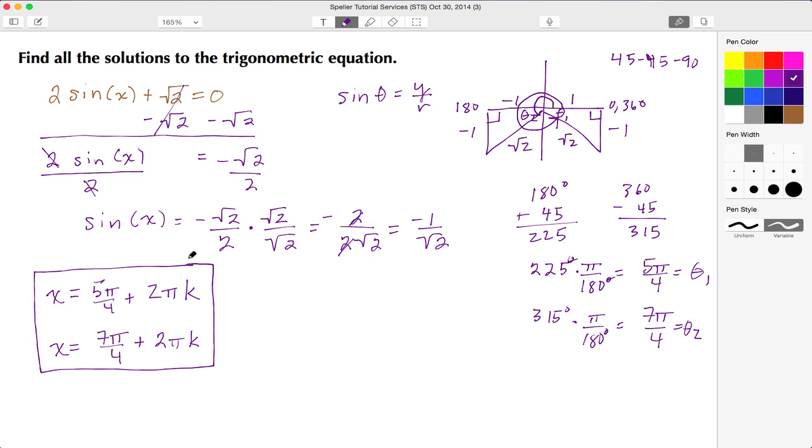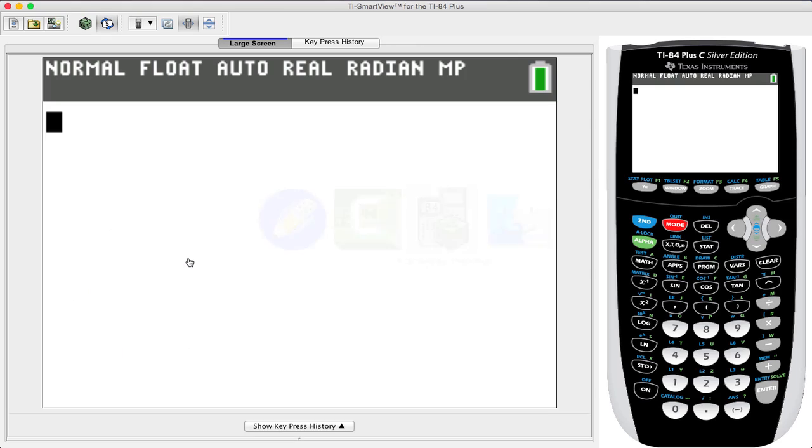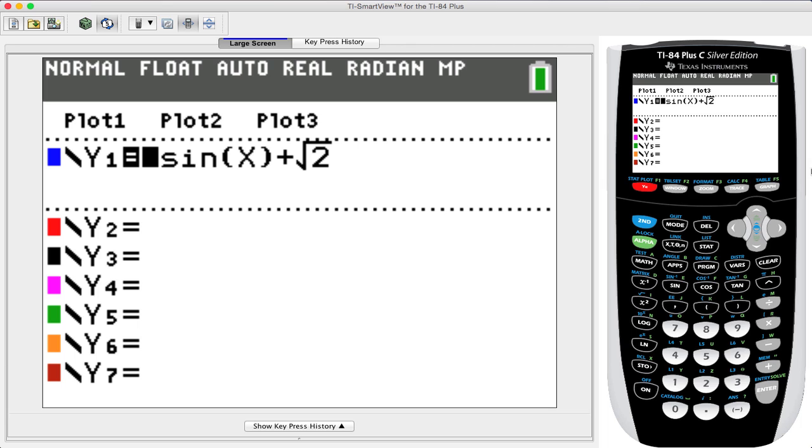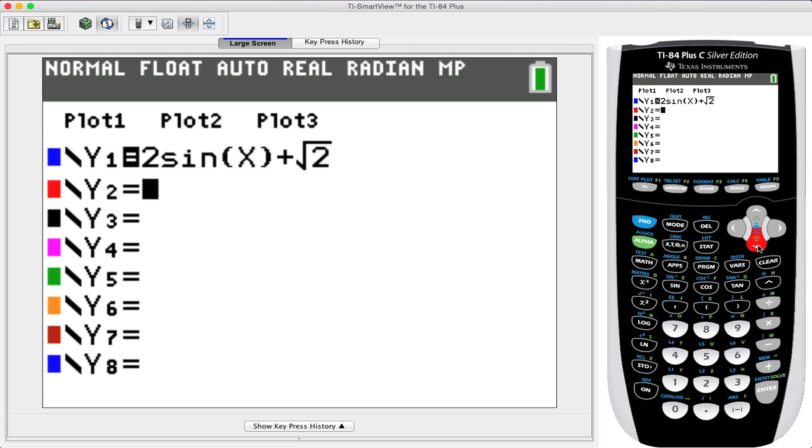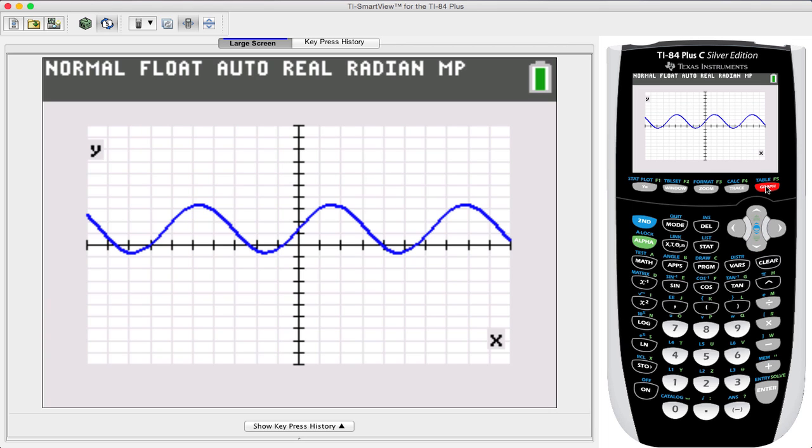Now what I want to do is actually verify these analytical results using our Texas Instruments calculator, so let's switch over. With the calculator, we're going to go ahead and press Y= and you'll notice I already have the original equation punched in: 2sin(x) plus root 2, and I want to go ahead and graph that.